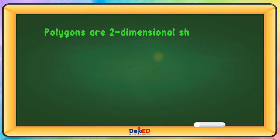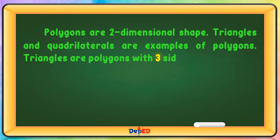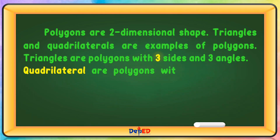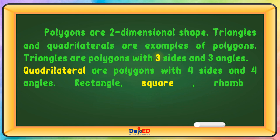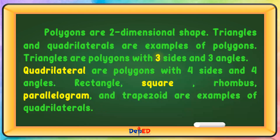Polygons are two-dimensional shapes. Triangles and quadrilaterals are examples of polygons. Triangles are polygons with three sides and three angles. Quadrilaterals are polygons with four sides and four angles. Rectangle, square, rhombus, parallelogram, and trapezoid are examples of quadrilaterals.